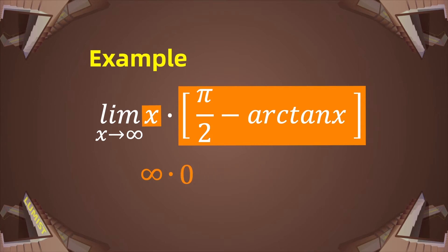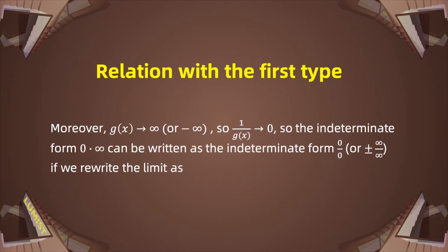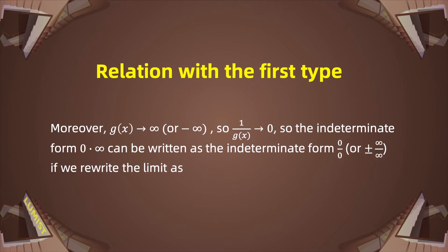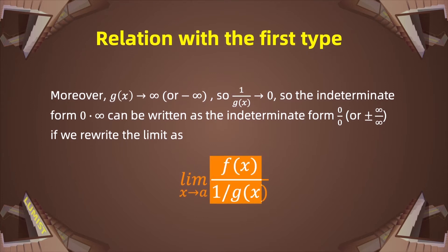This is the indeterminate form of zero multiplied by infinity. Moreover, if g(x) is approaching infinity or negative infinity, we can say that 1 over g(x) is approaching zero. So the indeterminate form of zero times infinity can be written as the indeterminate form of zero over zero, or infinity over infinity, if we rewrite the limit as limit of f(x) over (1 over g(x)) as x approaches a.